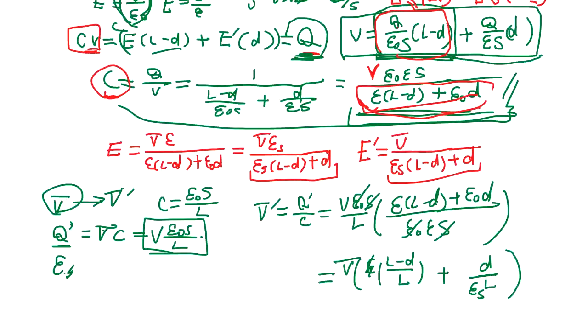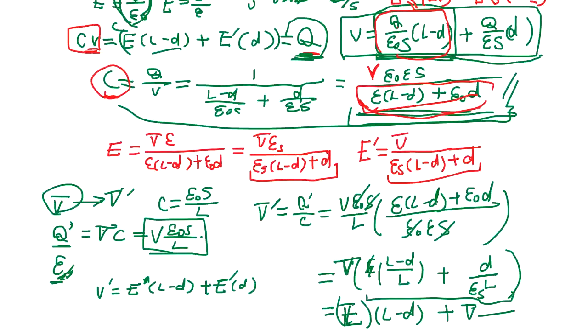Okay. So, actually, the V prime is slightly less than V because we inserted this. Now, what we do is, the V prime is E prime, E times L minus D plus E prime, D. So, we use this. V over L, L minus D plus V, D.